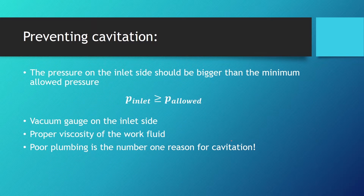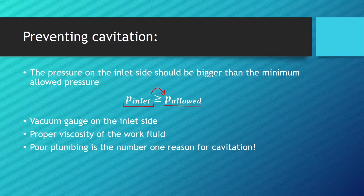How can we prevent cavitation? The pressure on the inlet side should be greater than the minimum allowed pressure — that is, the pressure below which vapor bubbles begin to form. We can put a vacuum gauge on the inlet side, ensure the work fluid is operating at the proper viscosity, and do a good job of designing the plumbing system of our hydraulic system.